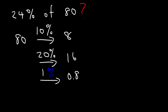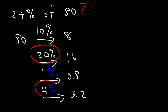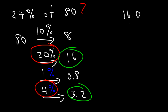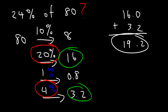If 1% is 0.8, what is 4%? Well, if 8 times 4 is 32, then 0.8 times 4 must be 3.2. To get to 24% we add 20% and 4%, so we add 16 and 3.2: 16.0 plus 3.2 equals 19.2.